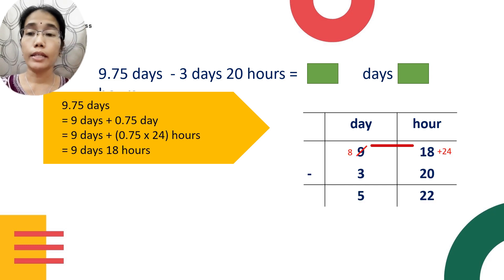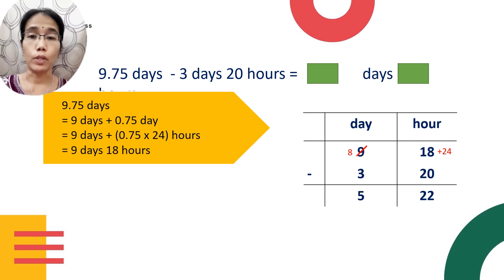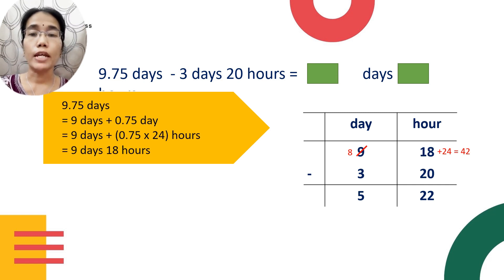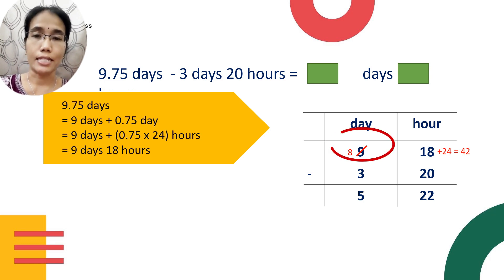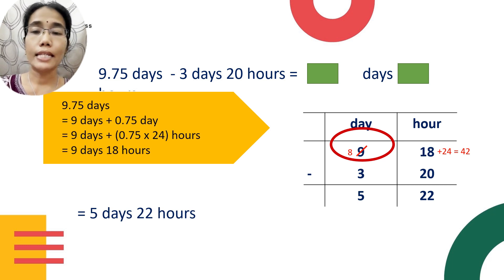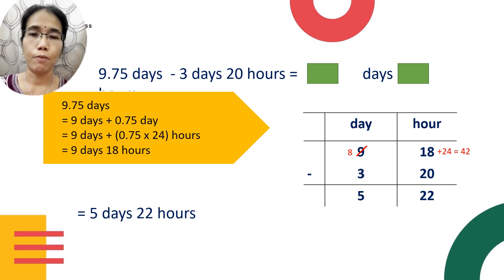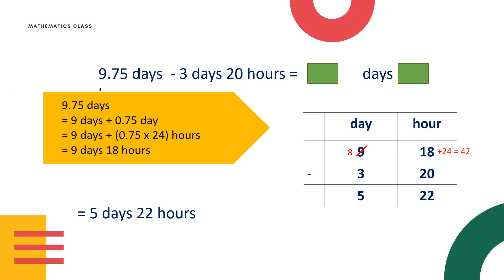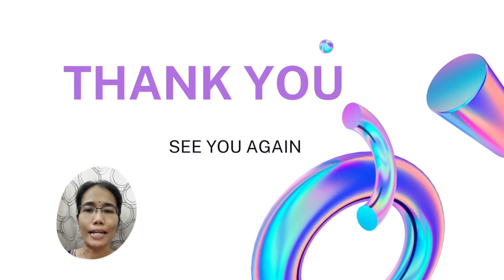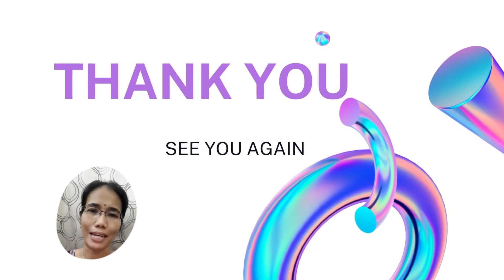So take one from days and give to hours — add 24, so 18 plus 24 gives you 42. Then 42 minus 20 gives you 22. Once you take one from the days, the days are left with eight. Eight days minus three days gives you five. So your answer will be five days and 22 hours. That will end our lesson today — we'll meet again, bye!